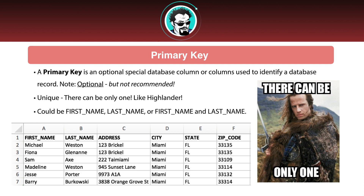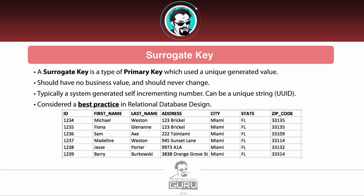A way to get around that is what's called a surrogate key. The surrogate key is a special type of primary key that uses a unique generated value. This value should have no business value and it should never change — the surrogate key must be unique and non-changing. Often this is managed underneath the covers, so inside an application running on top of the database you'll never see it. Typically this is a self-incrementing number, though different databases have different ways of incrementing it. It can also be a unique string.